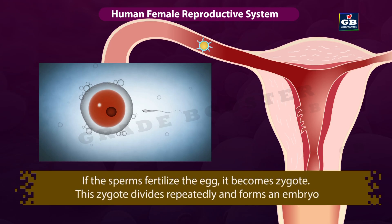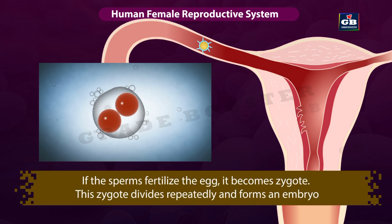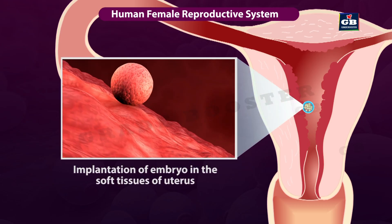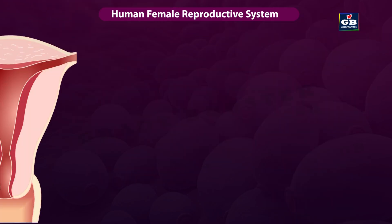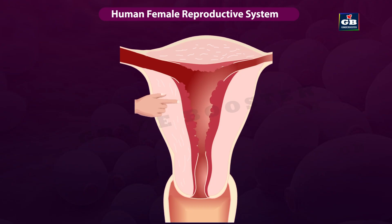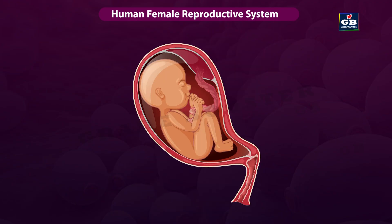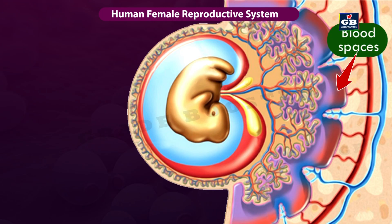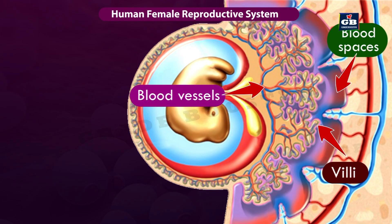If the sperms fertilize the egg, it becomes a zygote. This zygote divides repeatedly and forms an embryo. This embryo moves towards the uterus and gets implanted in the wall of the uterus. The lining of the uterus grows new tissues and blood vessels to accommodate the embryo. After implantation, the embryo grows into a fetus. The embryo gets nutrition from the mother's blood with the help of a special tissue called placenta — a disc-like structure embedded in the walls of the uterus. The placenta has blood spaces on the mother's side and villi on the fetus side, providing large surface area for exchange of materials between the blood of the mother and the blood of the baby.